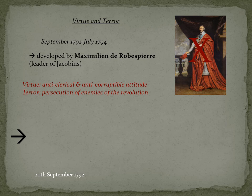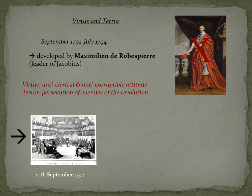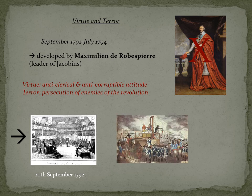The first important decision was the sentence of Louis XVI to death because of treason on the 20th of January 1793. He was executed on the 23rd of January 1793 as a provocative signal to the monarchies.